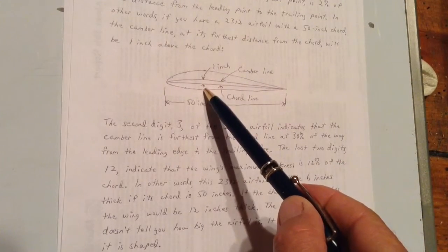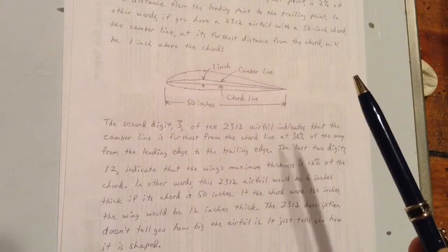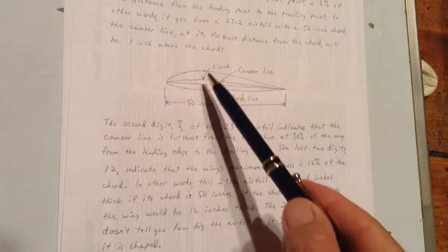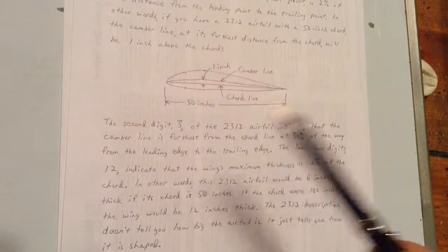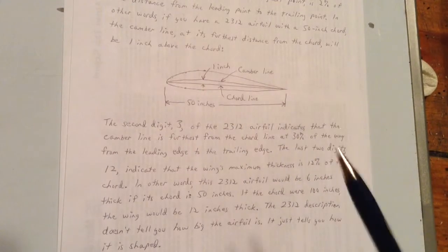So from the bottom of the wing to the top of the wing would be 6 inches if you have a 50 inch wing. It would be 12 inches if you have a 100 inch wing.